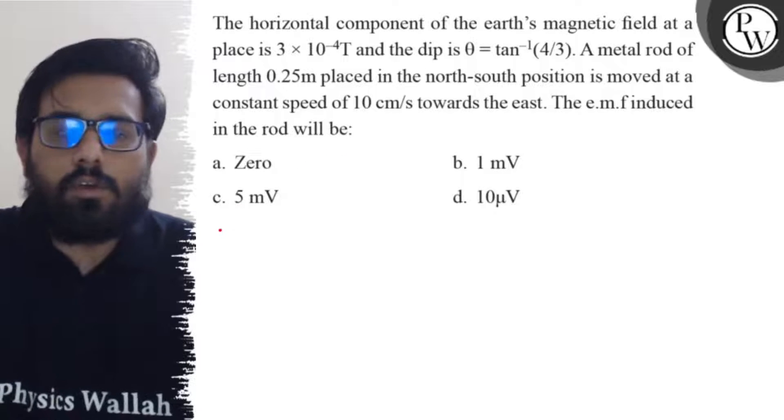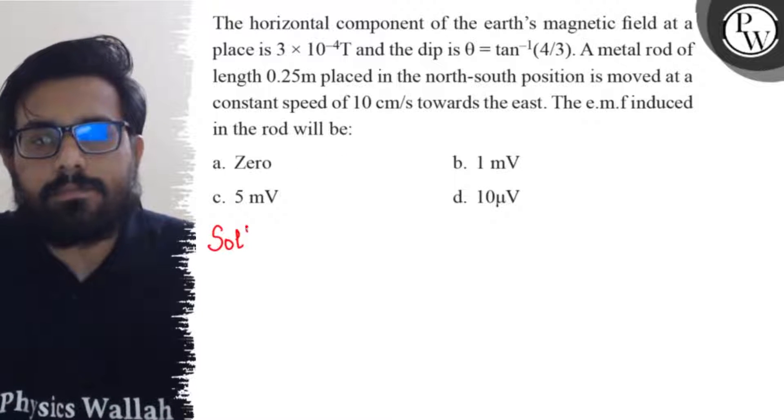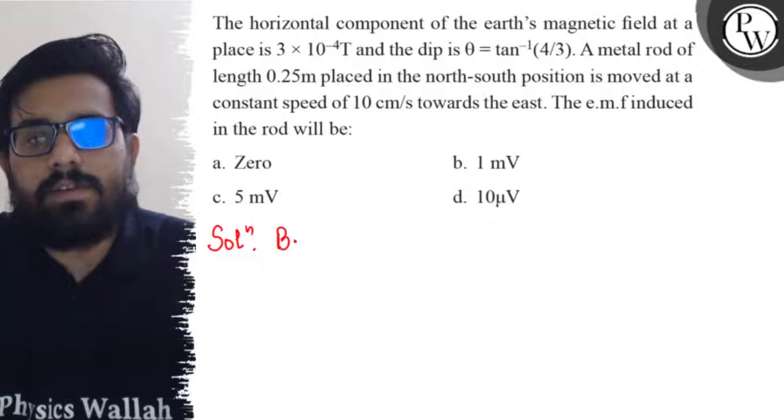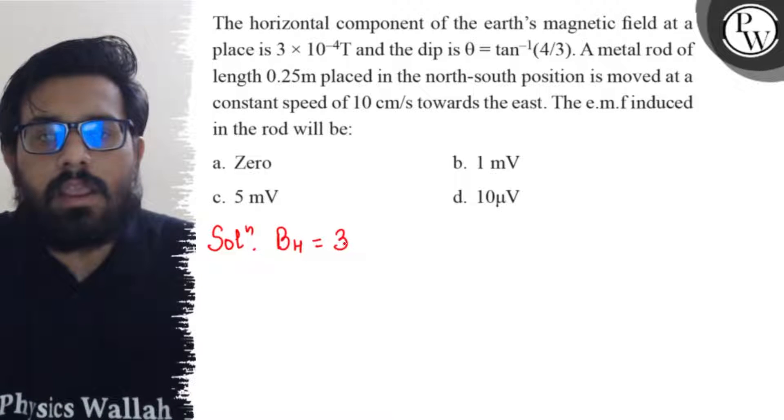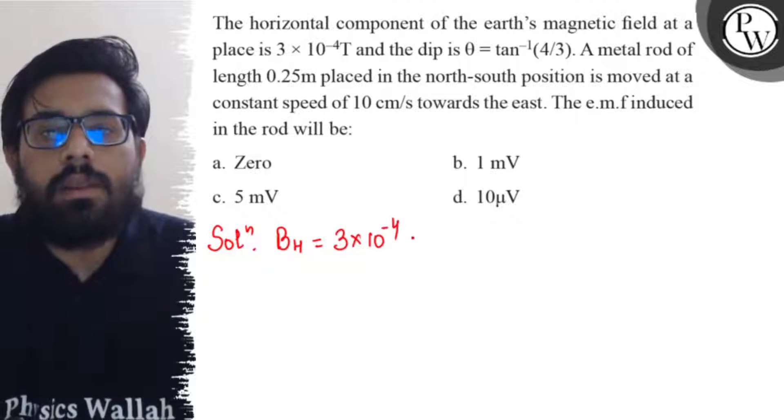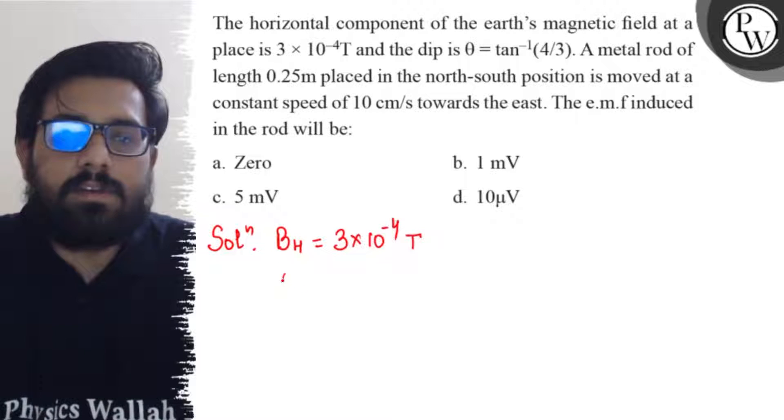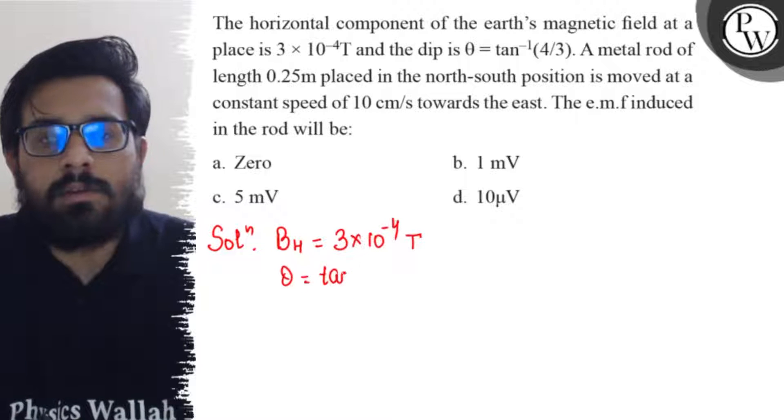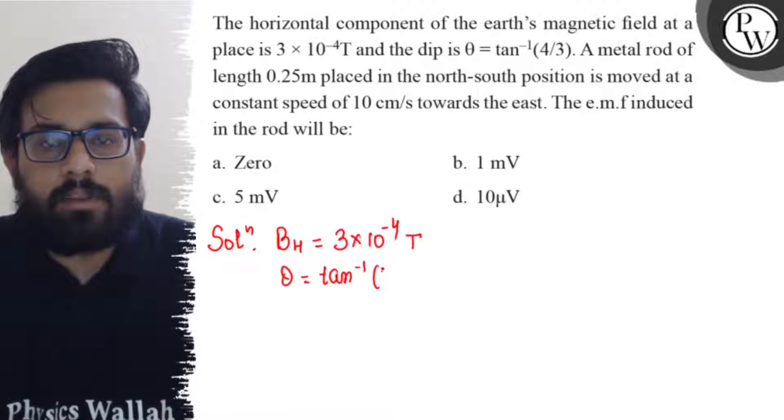So in this question, what are the given data we have? First of all, the horizontal component is given as BH equals to 3 into 10 to the power minus 4 tesla. Also the dip is given as theta equals to tan inverse 4 by 3.